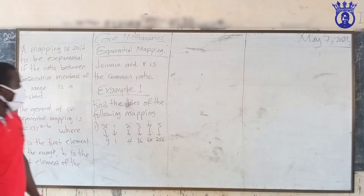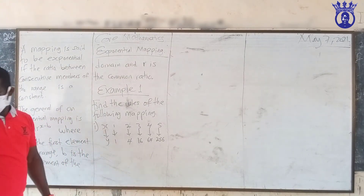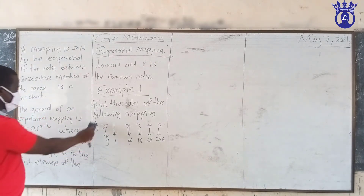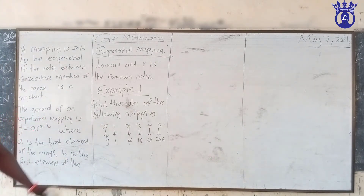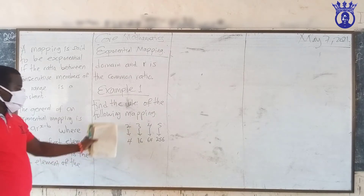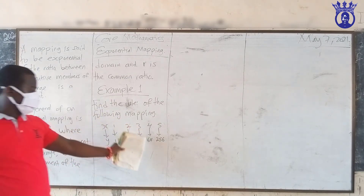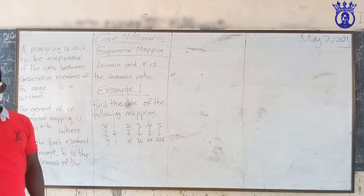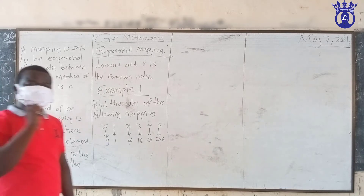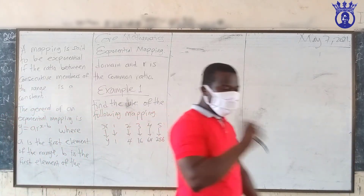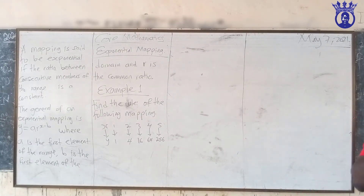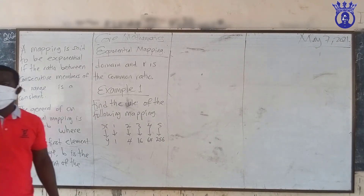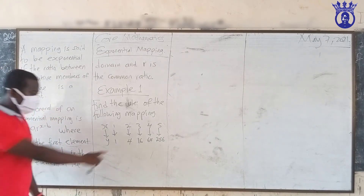Example one: they said find the rule of the following mapping. The first thing you must do is inspect to know the type of mapping. You have to look for a common ratio between the consecutive members of the range.